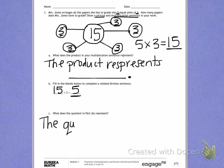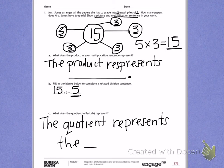The quotient represents the... You fill in the rest with groups, size, or total. If you're unsure, look at the number bond in the first part to see what 5 is meaning.